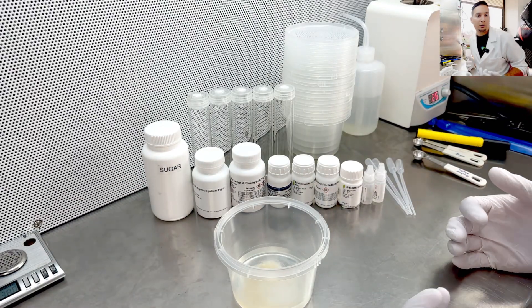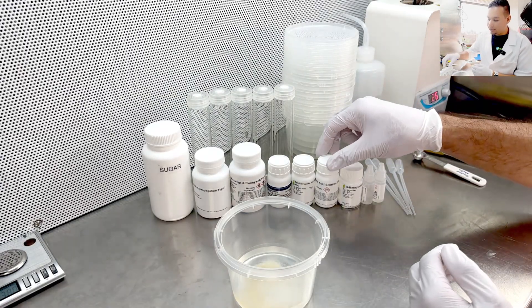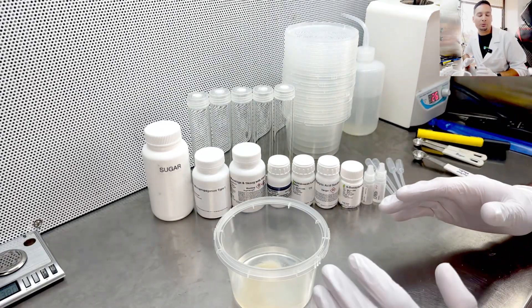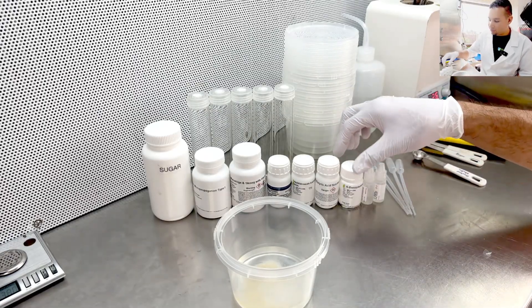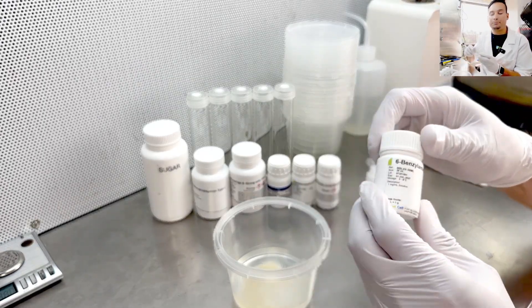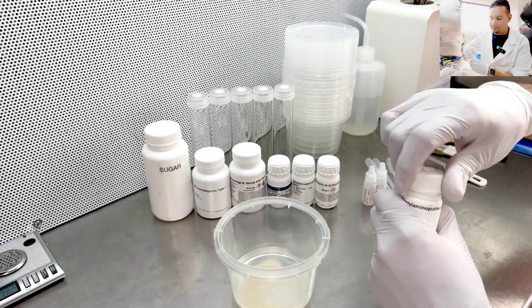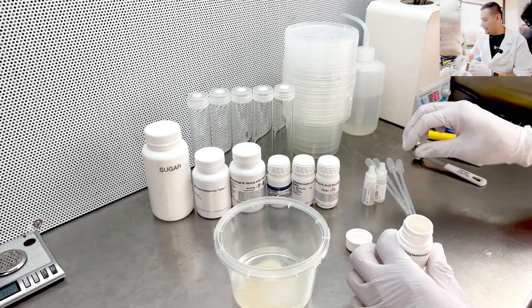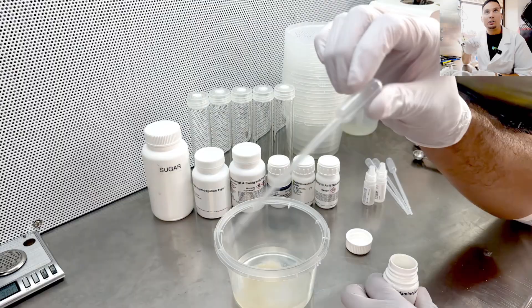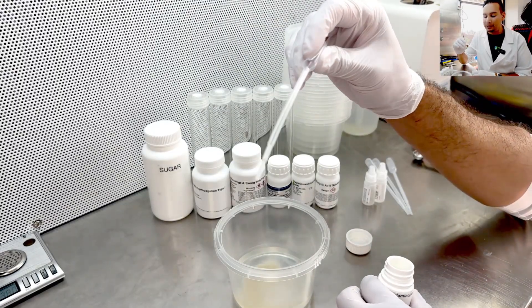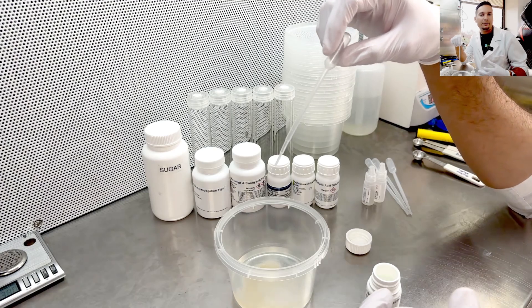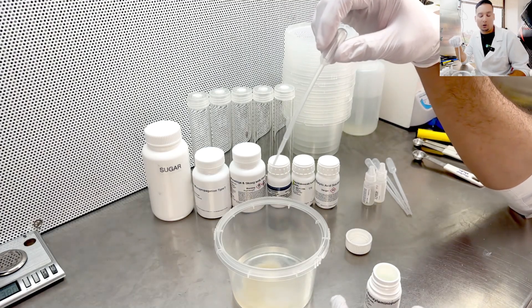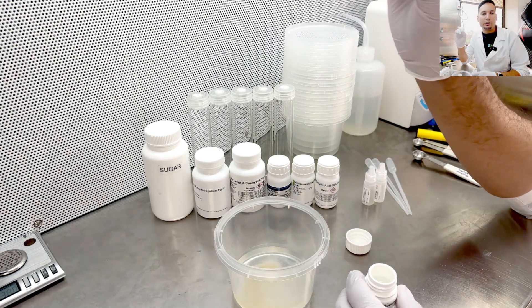Now let's add our liquid ingredients. For this media that I want to make, it's going to be houseplant multiplication media. So I'm taking my 6-BAP. I want to open this up and take one of the plastic micropipettes. I want to add roughly the equivalent of two milliliters of BAP per liter. So if we count drops,